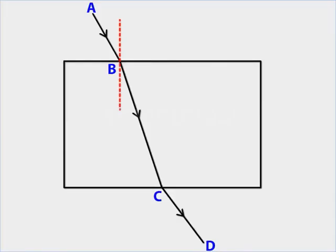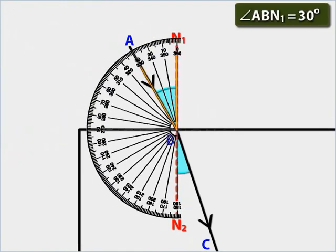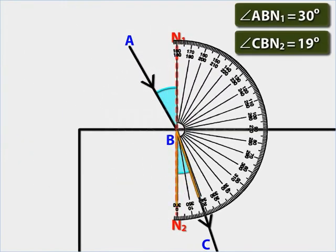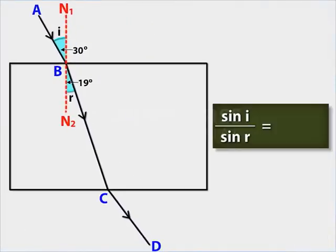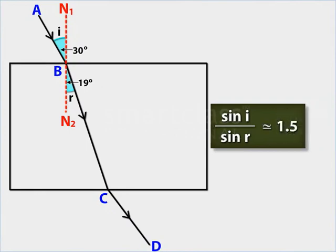Draw a normal N1N2 at the point of incidence, that is B. The angle ABN1 is the angle of incidence, while the angle CBN2 is the corresponding angle of refraction. Now measure the angle of incidence and the angle of refraction using the protractor. Next, find the ratio of the sine of the angle of incidence and the sine of the angle of refraction.